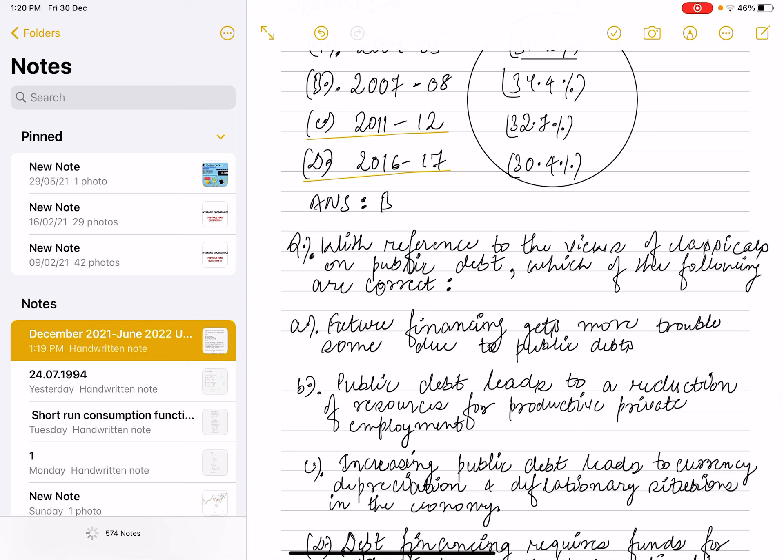Next question is: with reference to the views of classical economists on public debt, which of the following are correct? Future financing gets more troublesome due to public debt - this is correct according to classical theory. Next option: public debt leads to reduction of resources for productive private employment - this is also correct.